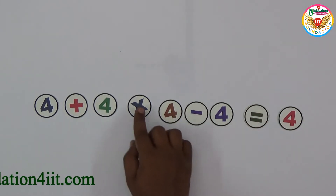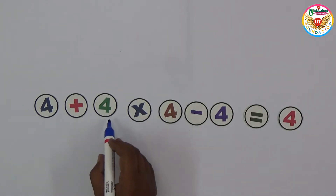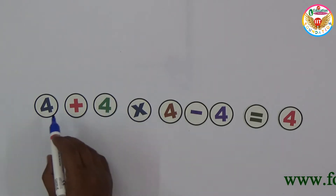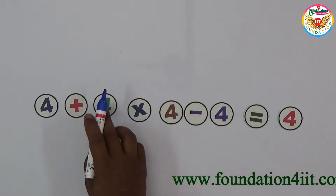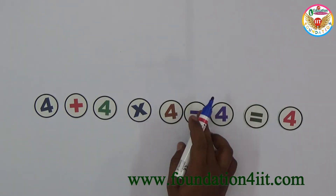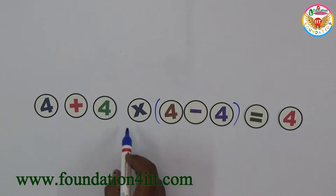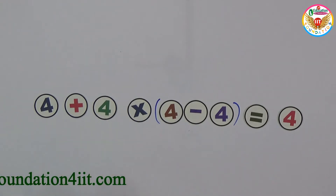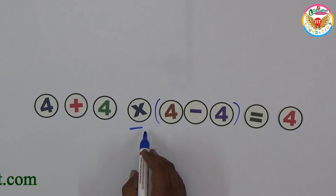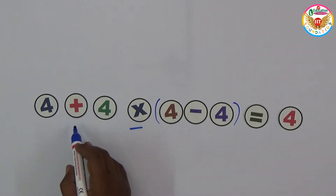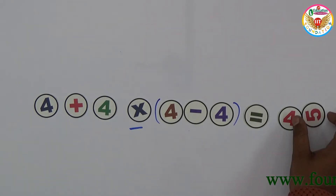One simple logic: 4 minus 4 is 0, and 0 times 4 is again 0, so 0 plus 4 equals 4. Applying the order of operations — multiplication first, then addition — (4 minus 4) times 4 plus 4 equals 4.